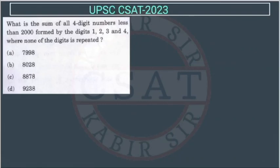Now this question: What is the sum of all 4-digit numbers less than 2000 formed by the digits 1, 2, 3, 4, where none of the digits is repeated?